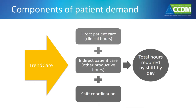The acuity data provides the patient demand information for the FTE calculation, and this information comes from the nurses and midwives who are delivering the care via the TrendCare system. The patient demand information is made up of the direct care hours — the hours nurses spend at the bedside delivering care — and also indirect patient care hours, which are the hours nurses and midwives spend doing other tasks necessary to support the delivery of patient care, like escorting patients to X-ray or quality improvement work.